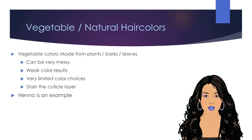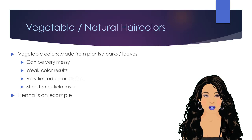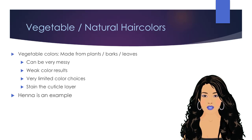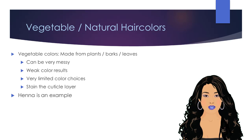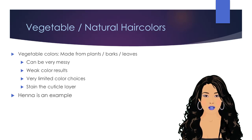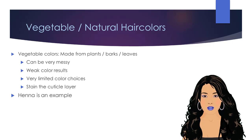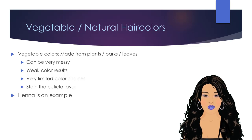There are some types of permanent hair colors called vegetable colors, that are made from plants, barks, and leaves. These types of hair color products can be very messy and leave the hair with very weak color results. Because these colors are made from plants, they are very limited in color choices. Unlike aniline derivative permanent colors that penetrate into the cortex, vegetable colors only permanently stain the cuticle layer. Henna is an example of a vegetable hair color.